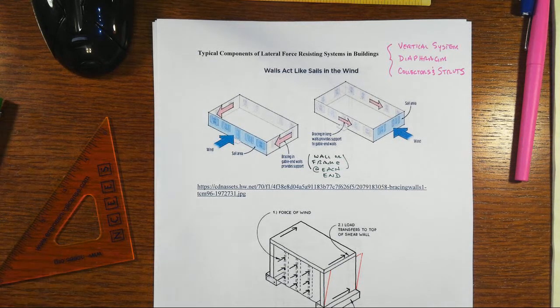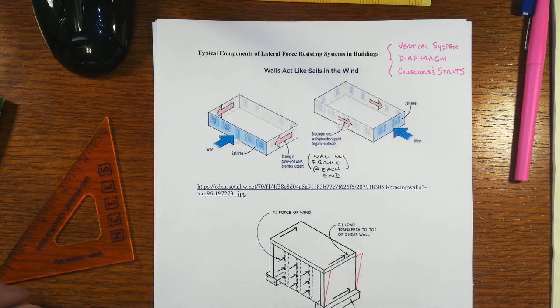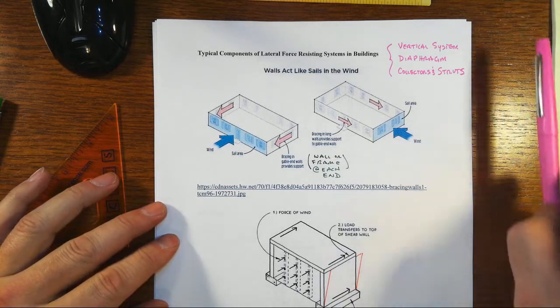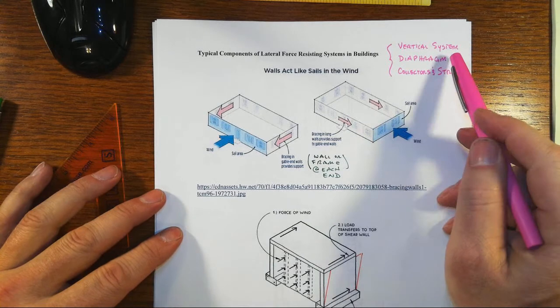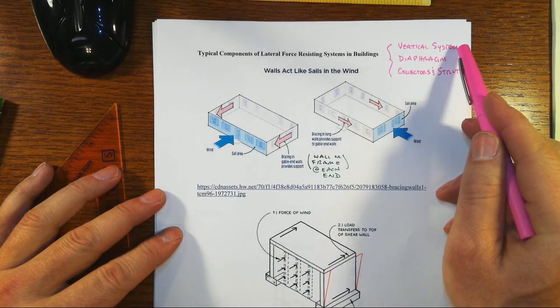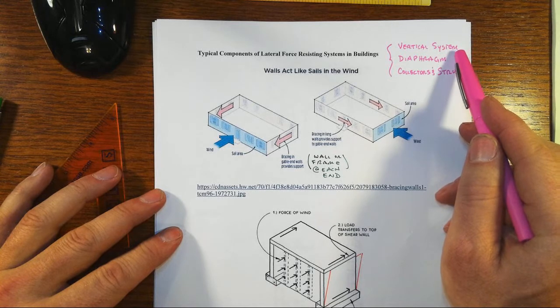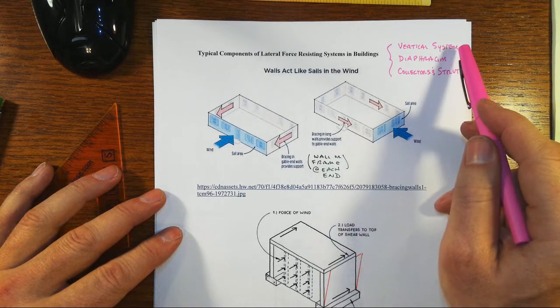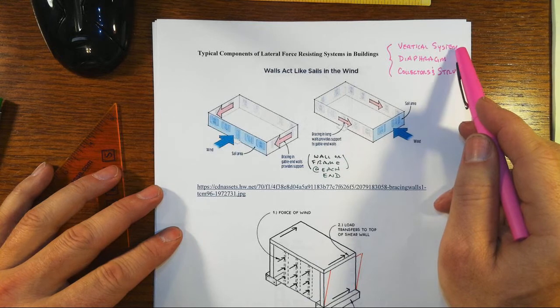Our next part here, we're going to talk about what the typical components are of these lateral force-resisting systems. So we just got done talking about the different kinds of vertical systems: brace frames, moment frames, and shear walls. All of those are examples of the vertical portion of the system, how we go up the height of the building.